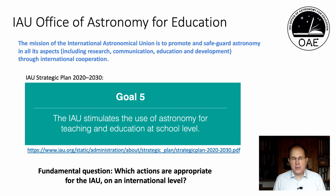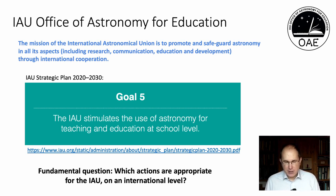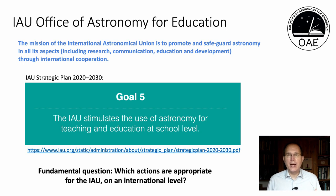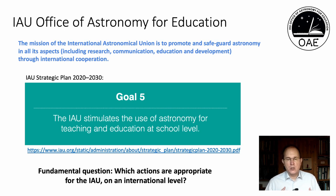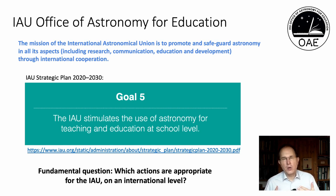Guidance for what the offices are meant to do can be found in the IAU's mission. The mission of the International Astronomical Union is to promote and safeguard astronomy in all its aspects, including research, communication, education, and development, through international cooperation. The IAU is more specific in its strategic plan 2020–2030: Goal 5 is that the IAU stimulates the use of astronomy for teaching and education at school level — primary and secondary schools. The fundamental question for the OAE is which actions that support astronomy education at school level are appropriate for the IAU on an international level.